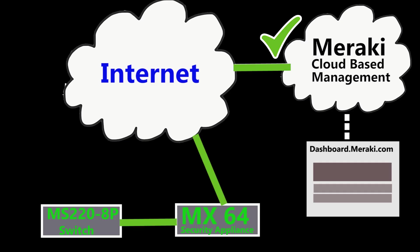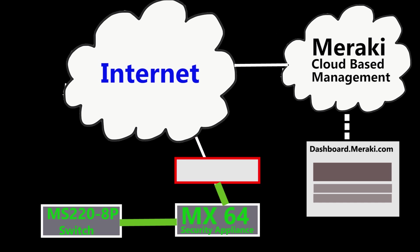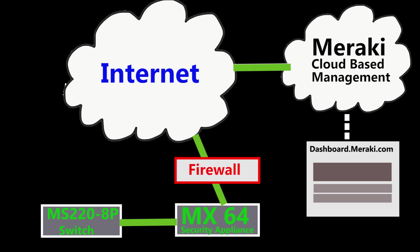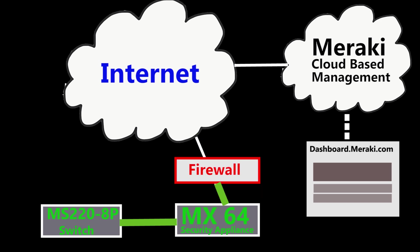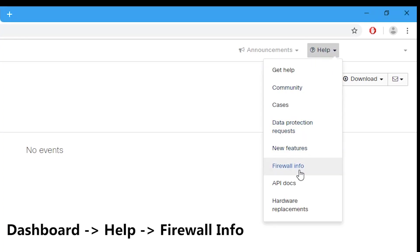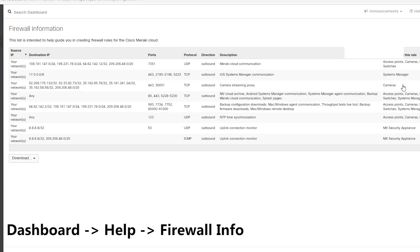Another reason that might cause this issue could be an upstream device such as a firewall blocking the MX management traffic. Each Cisco Meraki device needs to successfully communicate with the Cisco Meraki cloud through specific destination IP addresses and port numbers. If any upstream device blocks any of these IP addresses or port numbers it can disrupt the connection between the Meraki device and Meraki cloud. A complete list of the destination IP addresses and port numbers can be found on Cisco's documentation page.